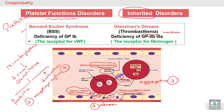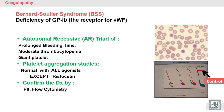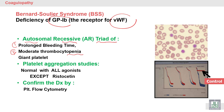Both Bernard-Soulier syndrome and Glanzmann's disease are platelet function disorders: Bernard-Soulier involves defective adhesion, Glanzmann's involves defective aggregation. Bernard-Soulier syndrome is an autosomal recessive disorder characterized by a triad of prolonged bleeding time, defective platelet adhesion to subendothelial microfibers, and thrombocytopenia — so it has both qualitative and quantitative defects.